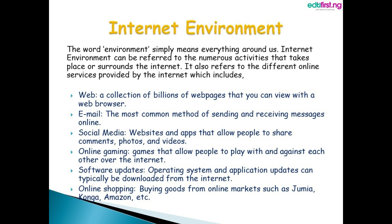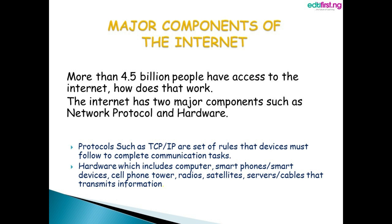This takes us to the major components of the internet. More than 4.5 billion people have access to the internet — how does that work? The internet has two major components: network protocols and hardware. First, network protocols such as TCP/IP — a set of rules that devices must follow to complete communication tasks. Second, hardware, which includes computers, smartphones or smart devices, cell phone towers, radios, satellites, and servers through cables that transmit information.